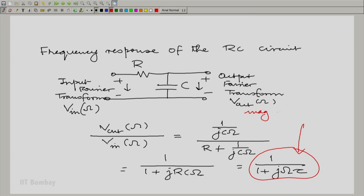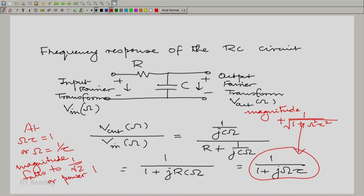Now we can see what happens. This expression has a magnitude given by the positive square root of 1 by 1 plus omega squared tau squared. So, what is the significance of omega equal to 1 by tau at omega tau equal to 1 or capital omega is equal to 1 by tau?